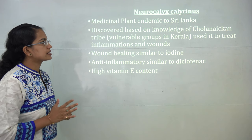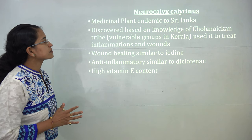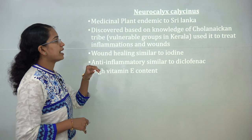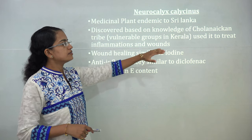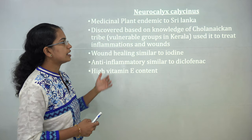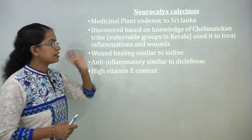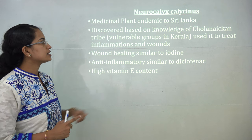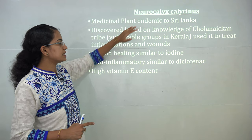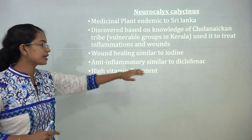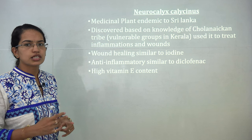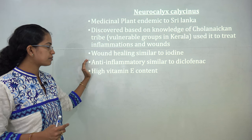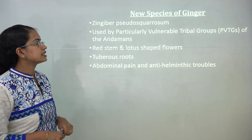Neuroclycanus is a medicinal plant endemic to Sri Lanka, discovered by the Kani tribe from Kerala — a very vulnerable tribal community — who used it to treat wounds. The wound-healing property of this plant is equivalent to iodine or povidone iodine (tincture iodine), and it has very high anti-inflammatory properties and high vitamin E content.